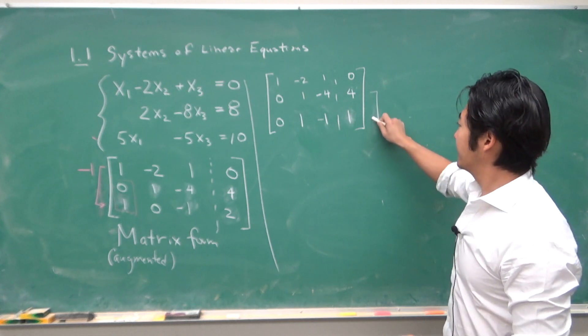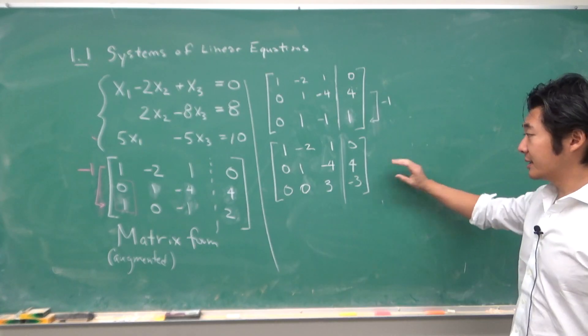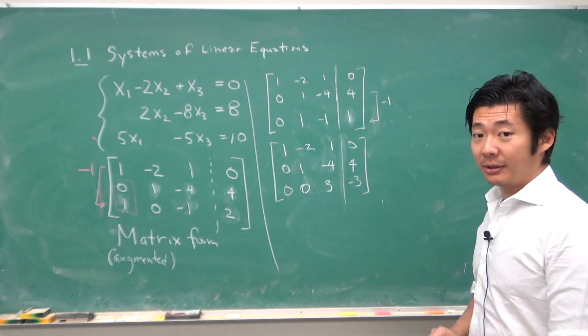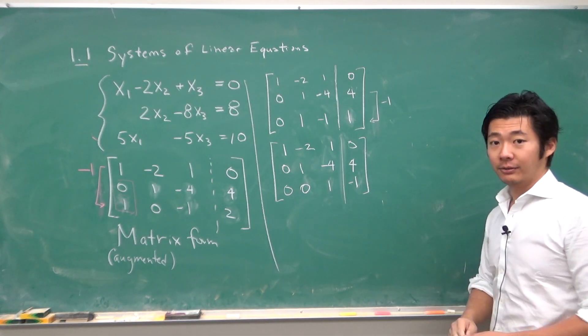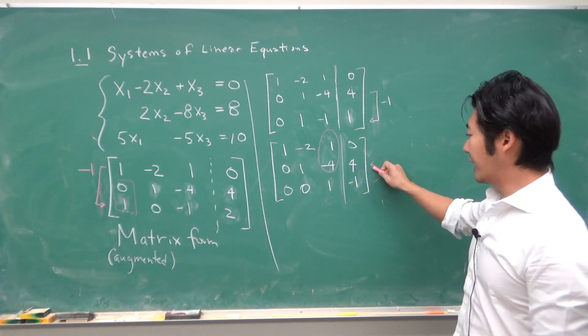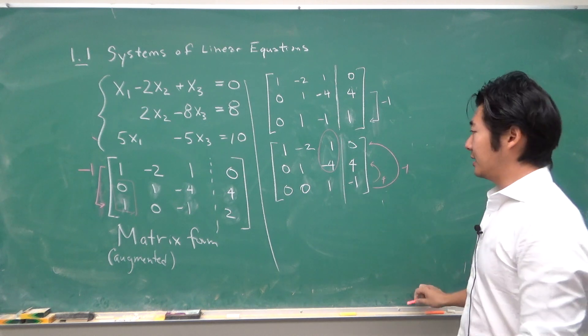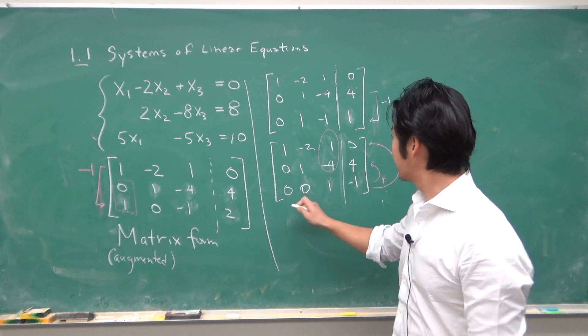And then we can add this in. Minus 1 times this row into here. That becomes this becomes this. And then we can divide by 3 so that this will become 1 and negative 1. Now we need to get rid of these two. So we will multiply this row by 4 and then this row by negative 1 and add it into each so that the matrix becomes something like this.